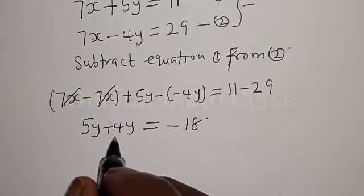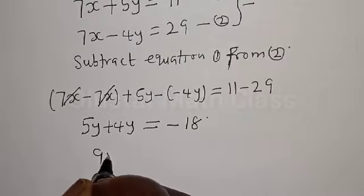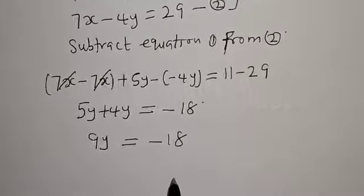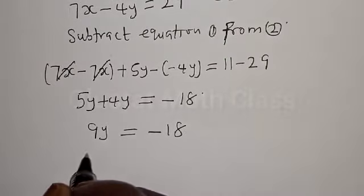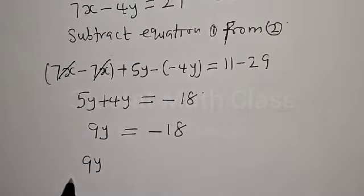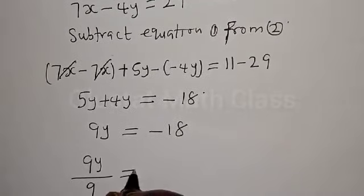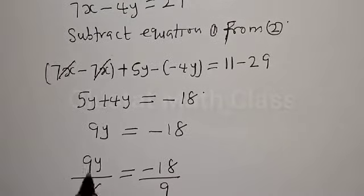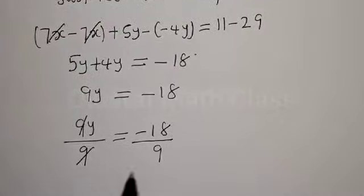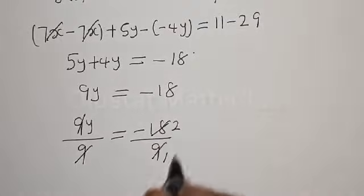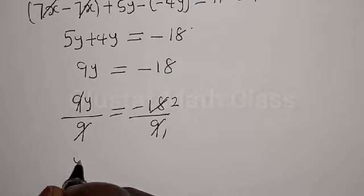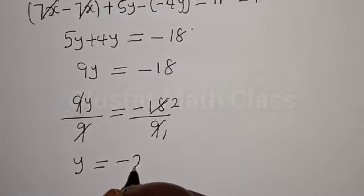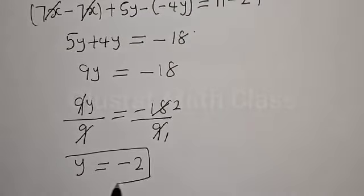5y plus 4y is 9y, equal to 11 minus 29 which is minus 18. Now let's divide both sides by 9: 9y divided by 9 is equal to minus 18 divided by 9. Therefore y is equal to minus 2.